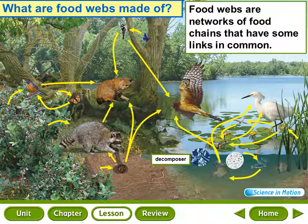Arrows pointing away from an organism show the animals that eat that organism. A predator is an animal that hunts other animals for food, whereas the animal that is being hunted for food is called the prey.